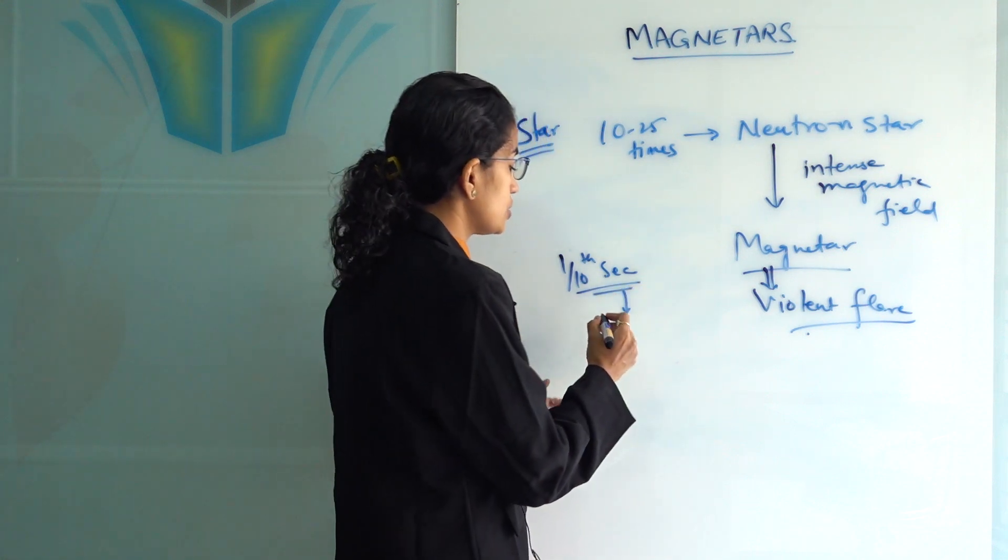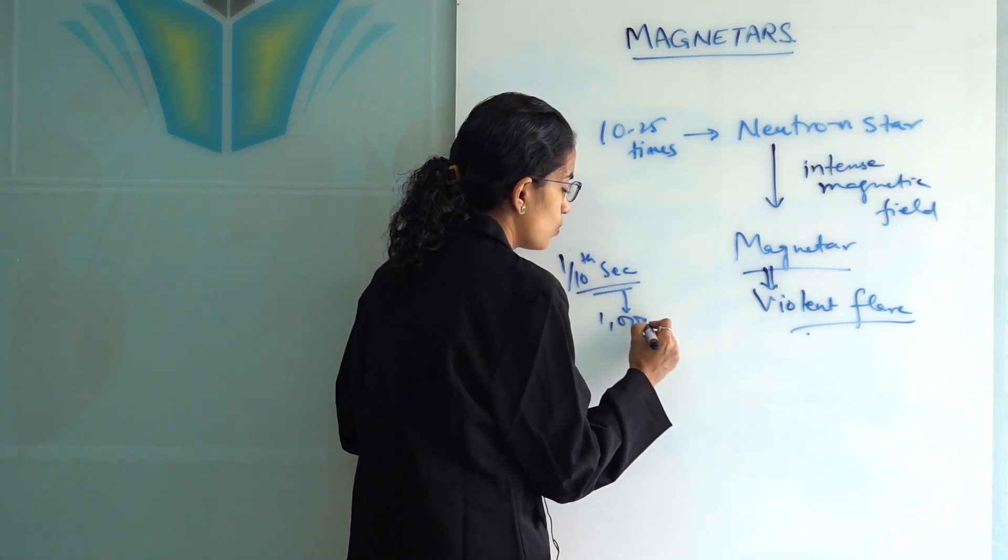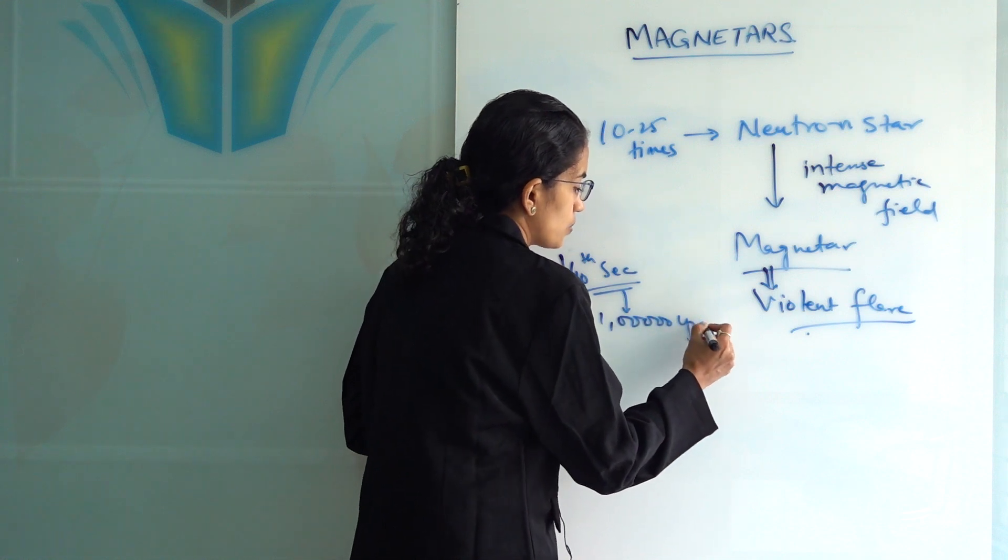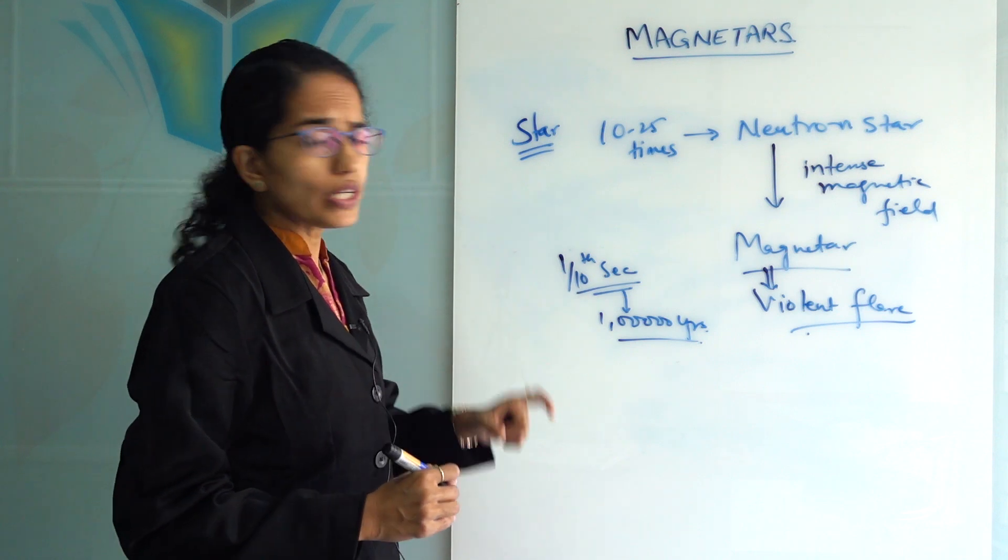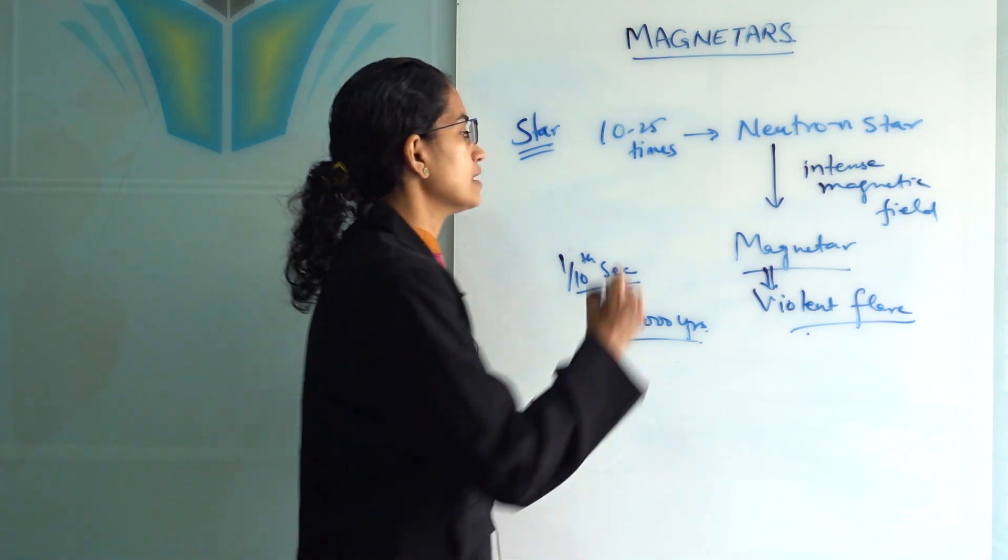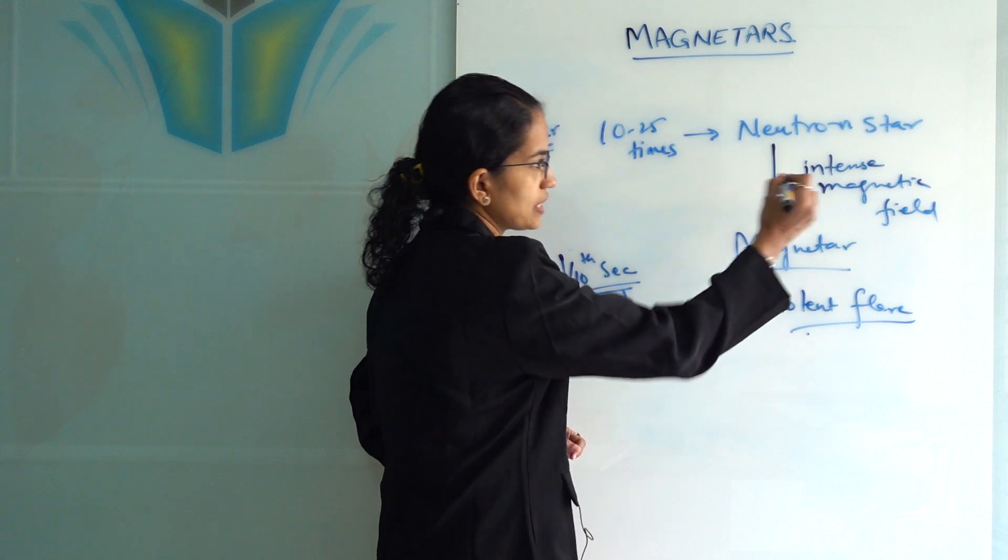You can understand the extent of energy which is released by magnetars. Now what is so unique about magnetars? Magnetars have, as we said, an intense magnetic field around 10 raised to power 15 gauss.